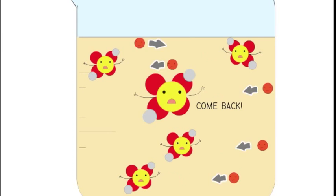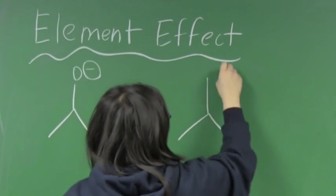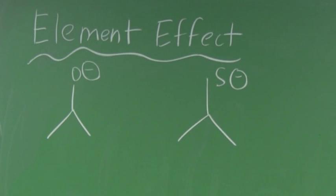If that charge is unstable, then the acid will not be willing to give up the proton, and it'll be a weak acid. If we look at the two structures, we see that the negative charge is on oxygen and sulfur.